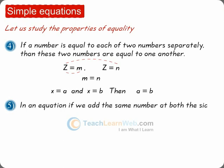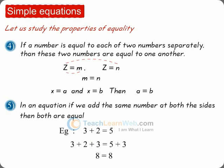Addition property: in an equation, if we add the same number to both sides, then both sides remain equal. Example: if 3 plus 2 equals 5, and we add 3 on both sides, we have 3 plus 2 plus 3 equals 5 plus 3, which gives 8 equals 8, which is true.